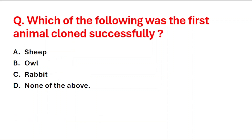Next question: which of the following was the first animal cloned successfully? A: sheep, B: ox, C: rabbit, D: none of the above. The first animal cloned successfully is sheep, so option A is the right answer.